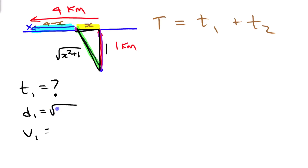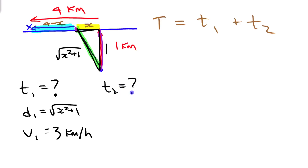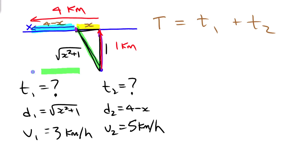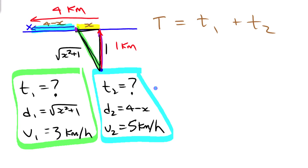So my rowing distance is √(x² + 1) and my rowing speed is three kilometers per hour. For the walking part (time two), the distance is four minus x and I can walk at five kilometers per hour. I can use this information to write my function for total time.